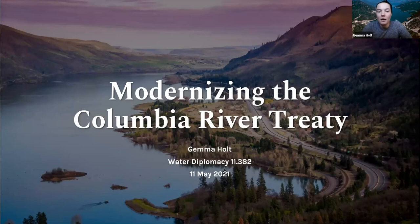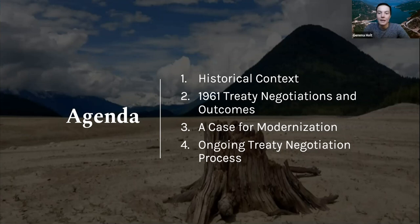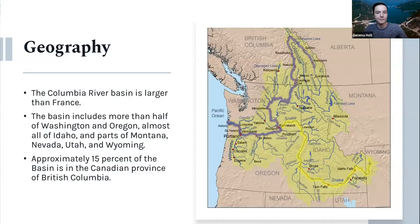Hi everyone, today I'm going to be talking about the ongoing efforts to modernize the Columbia River Treaty, which was originally signed in 1961. I'll go through the historical context that led to that signature, talk about the 1961 treaty negotiations and outcomes, the ongoing case for modernization, and the ongoing treaty negotiation process — covering a lot of time periods. So a little bit of a geographical overview first.